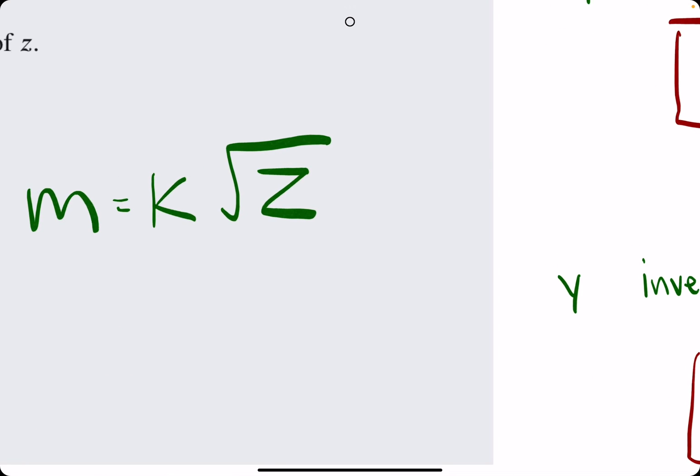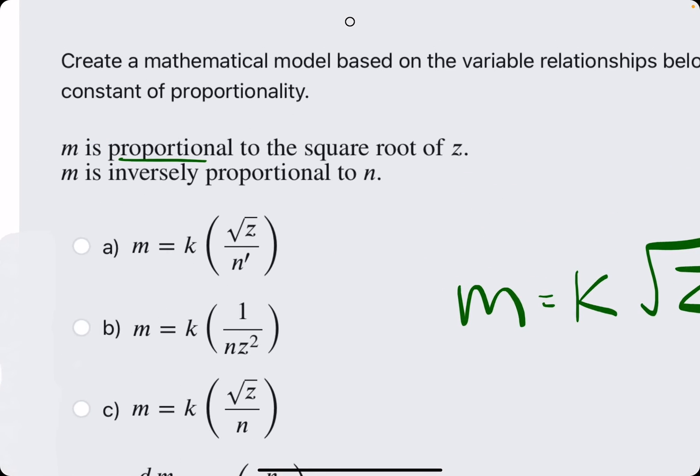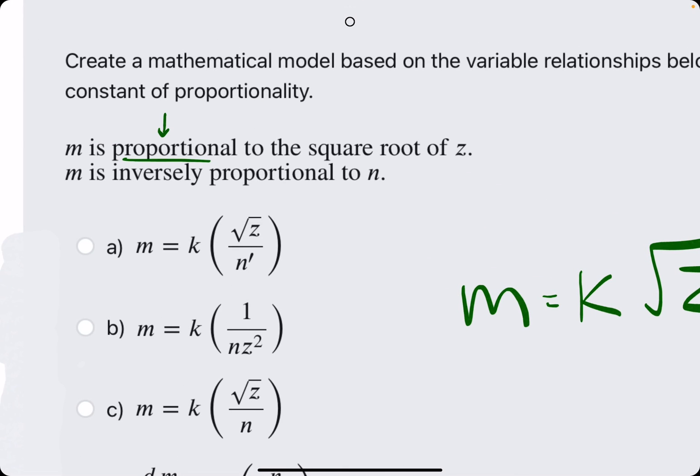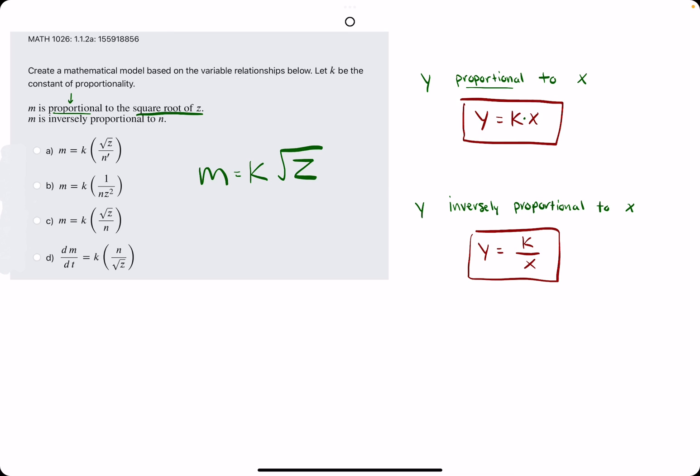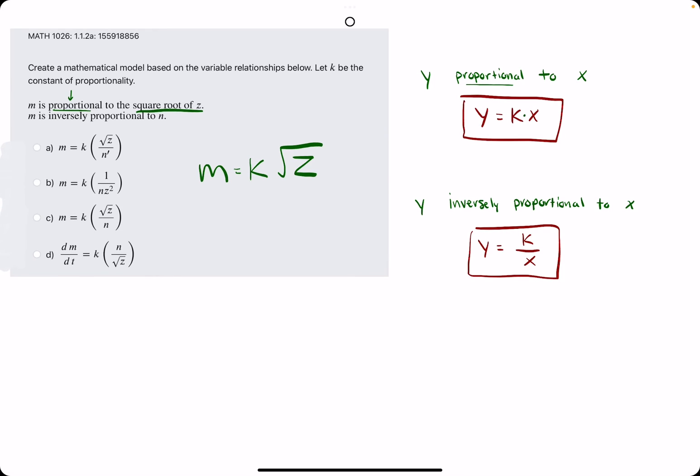Why do I multiply k and z? Because they tell us it's proportional to the square root of z. That means we use this rule where we just multiply k and x. We multiply whatever the value m is proportional to. So we have m is equal to k times the square root of z.